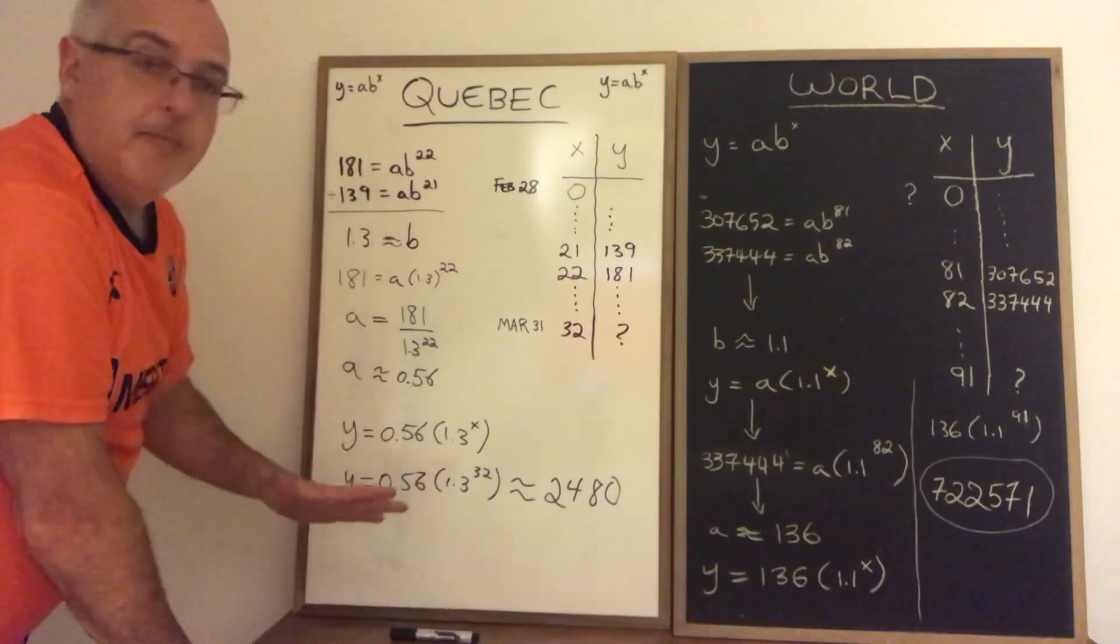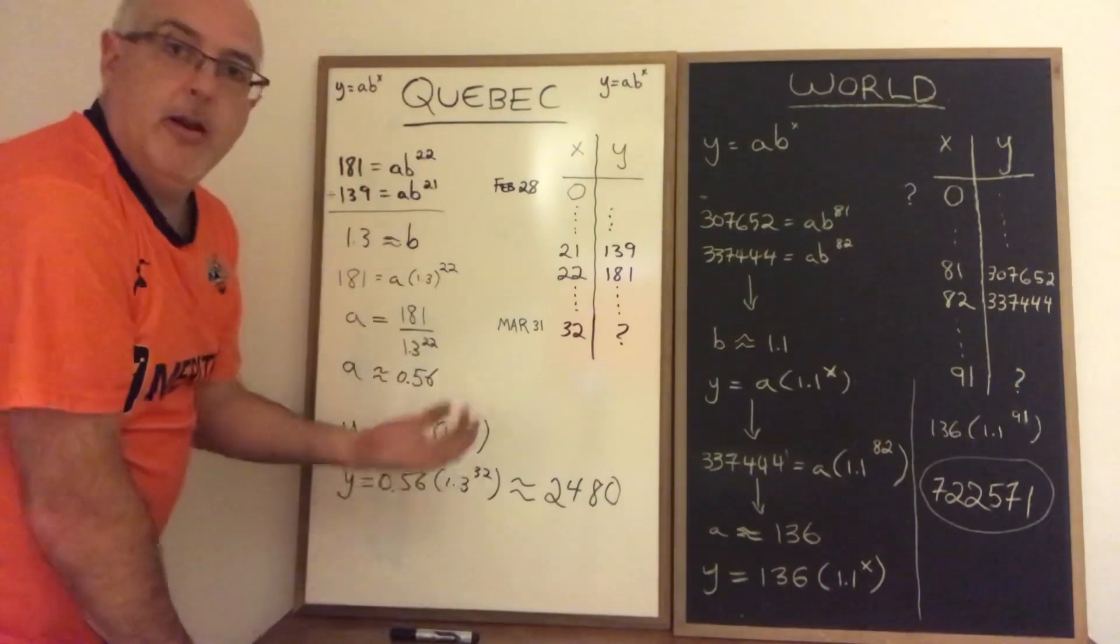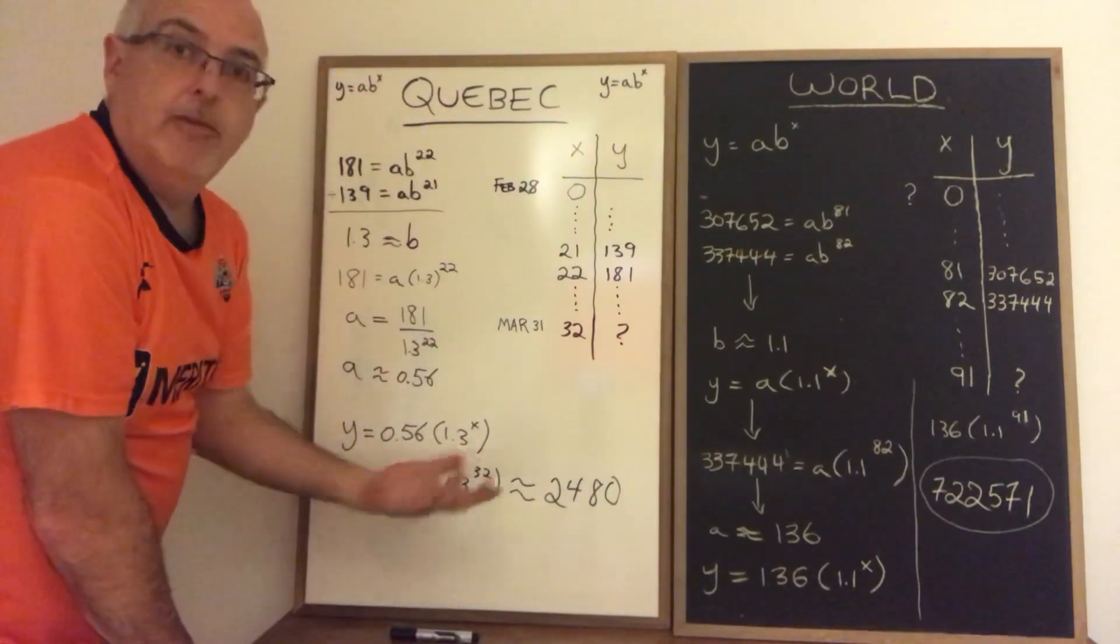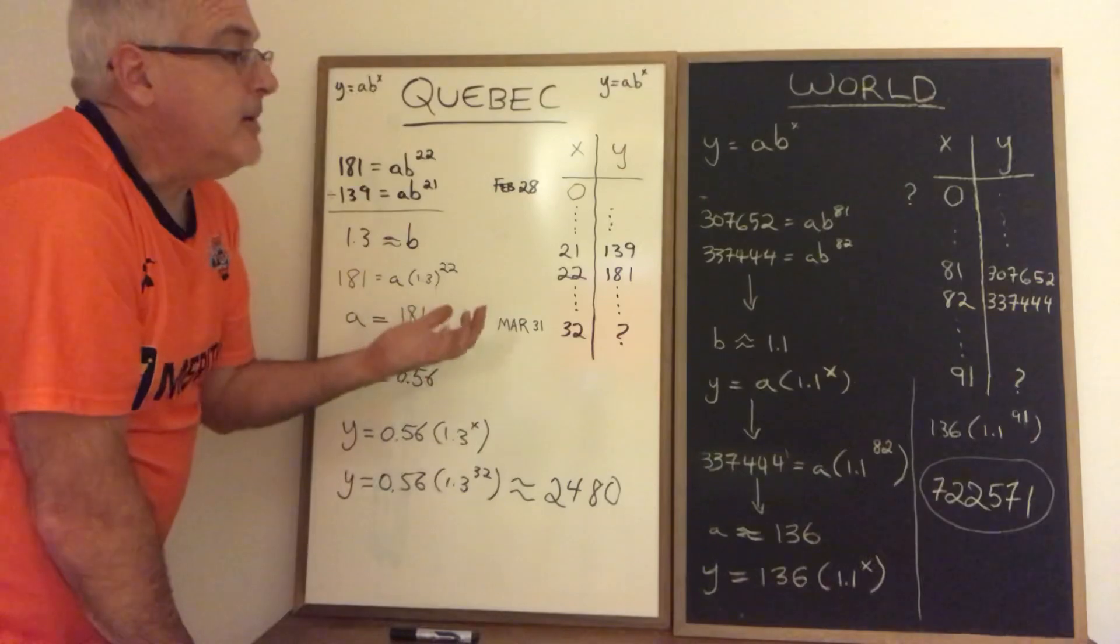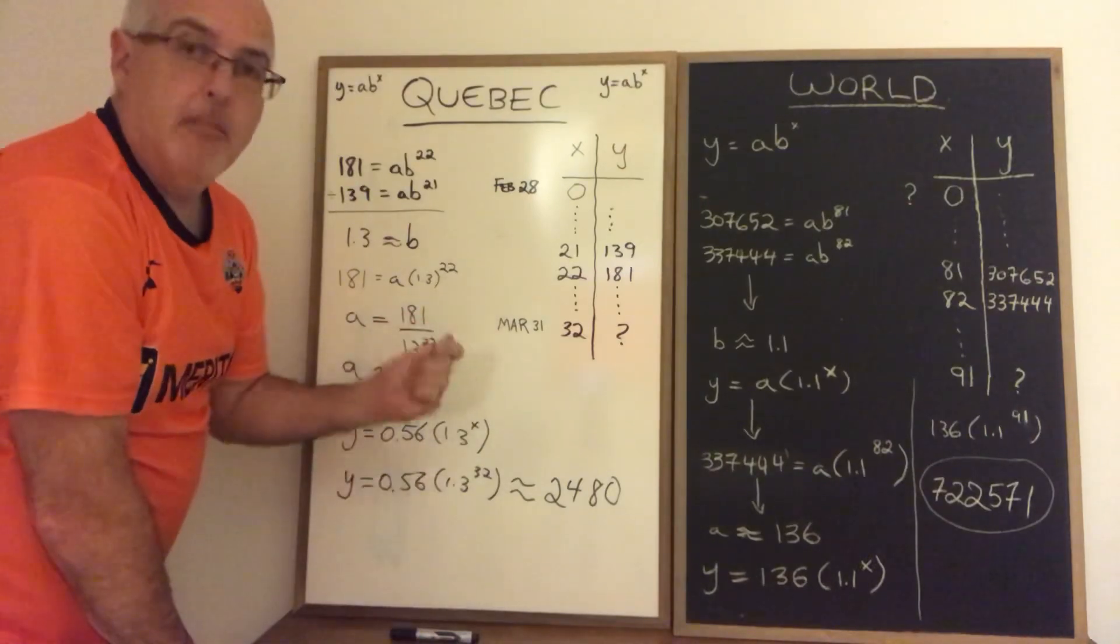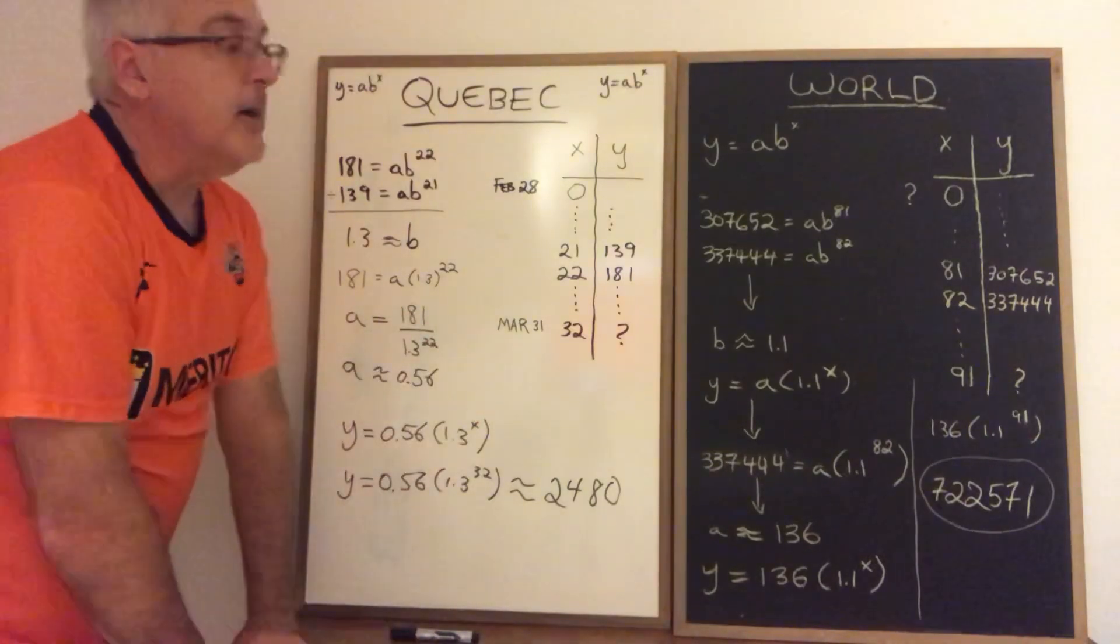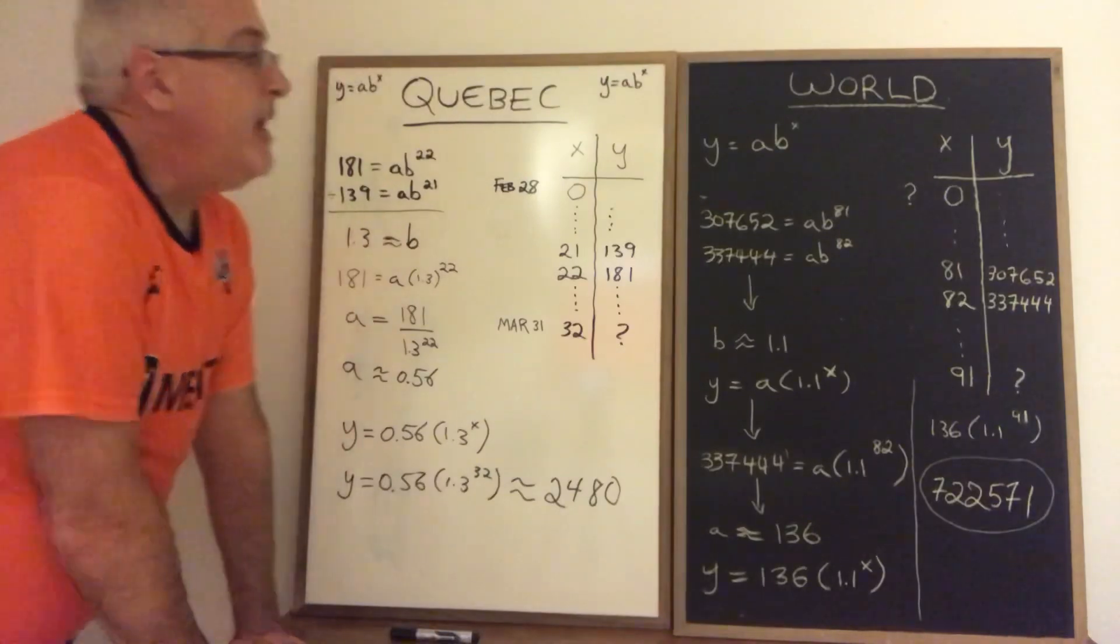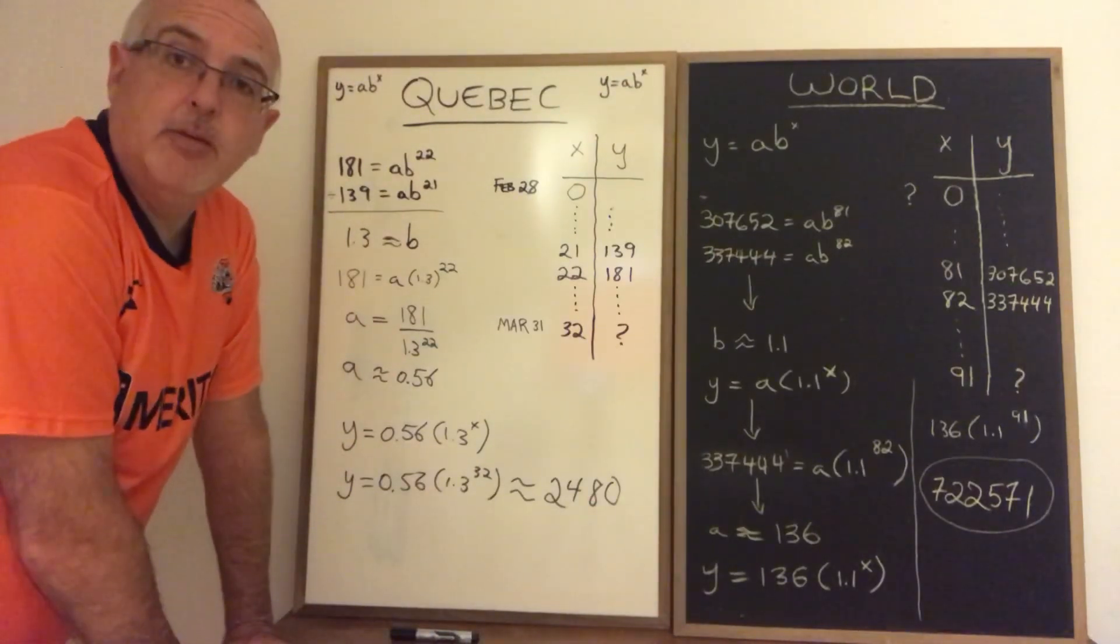But I knew all along that what I was doing was not coming up with an equation that perfectly reflects this situation. I was making an approximation. I'm making a model. This is what making an algebraic model is. That is today's daily dose of math. Please like and subscribe.